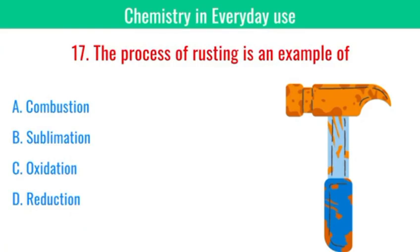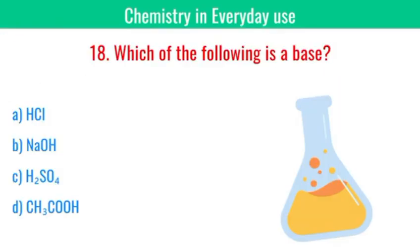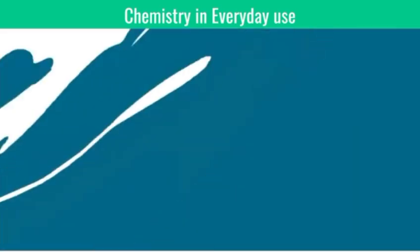The process of rusting is an example of? The answer is oxidation. Rusting is an example of oxidation. Which of the following is a base? The answer is NaOH, sodium hydroxide.